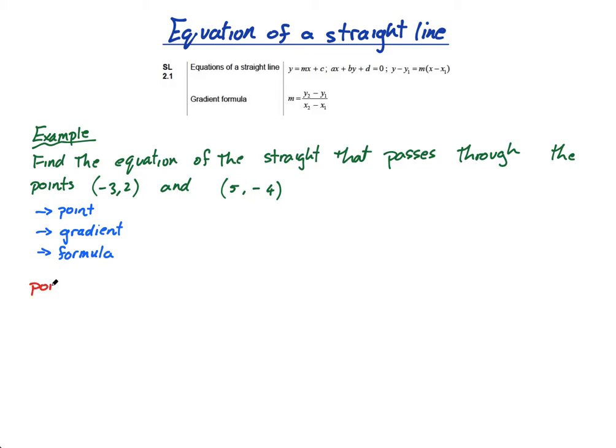So the first thing we're going to get is a point. What's the point? Well, we have a point. We have two points. This one and this one. Choose the one with the nicest numbers. I'm going to pick (-3, 2) because they're smaller than these. If this was positive I'd probably choose (5, 4) because the negative can cause issues. Fine. I have the point.